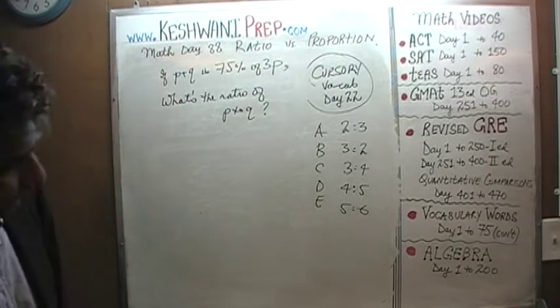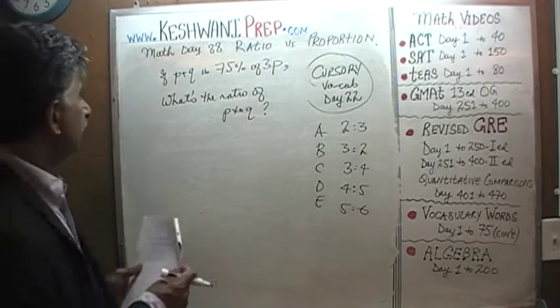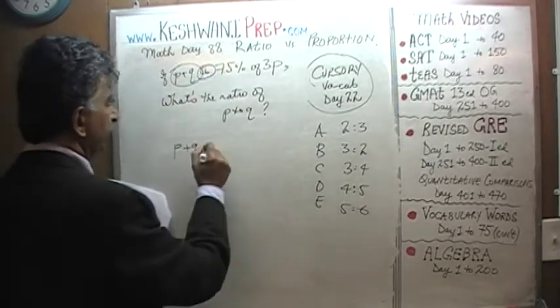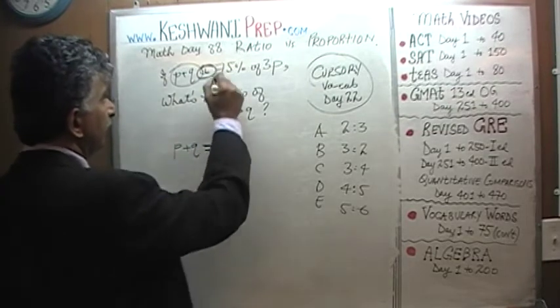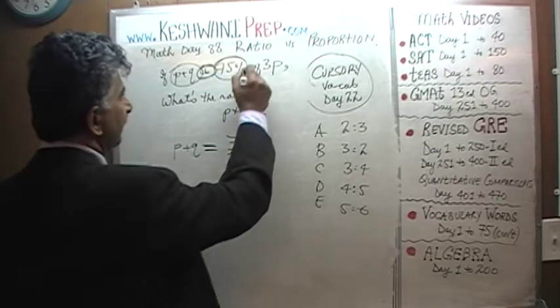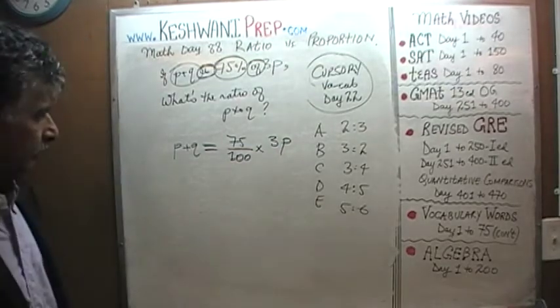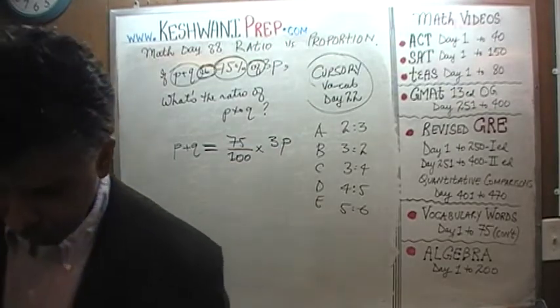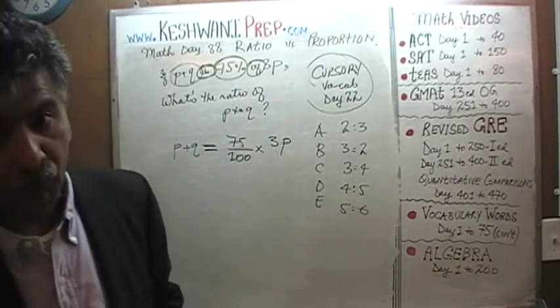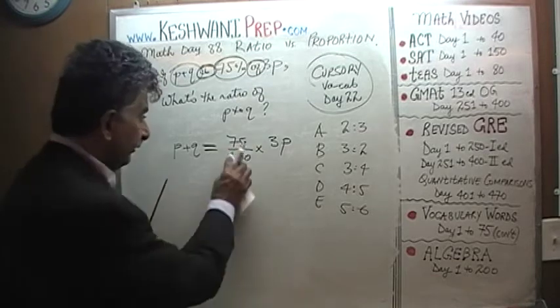Alright, here we go. We are told that the sum of P and Q, the sum of P and Q, we are told, is, is means equal, equals 75%, 75% means over 100, 75% of, of means times 3P. Now, you could leave it like this in a silly way, like 75% like that, or we know, of course, 75% if you divide top and bottom by 25, 75% is 3 quarters.